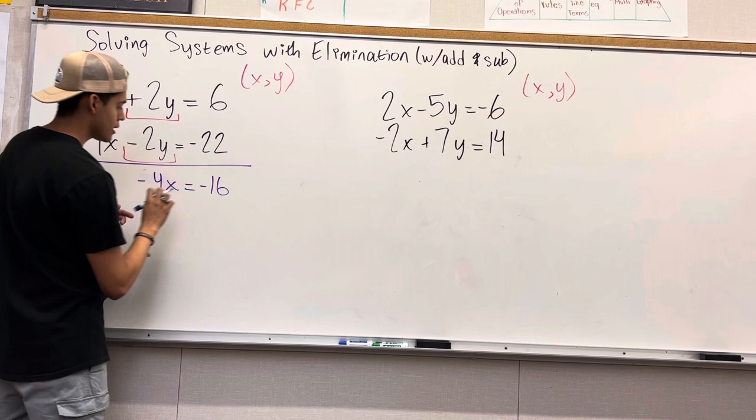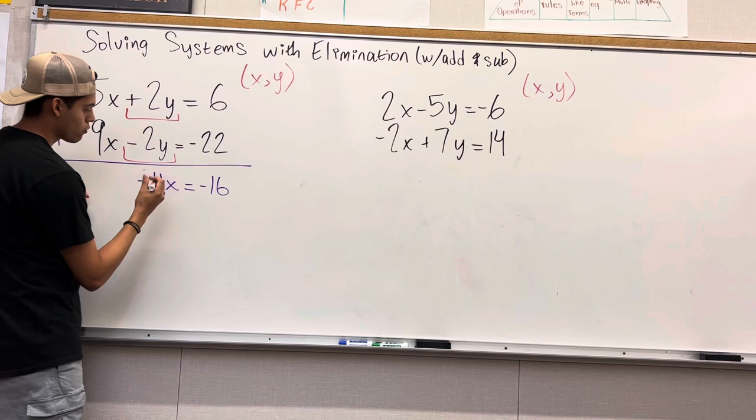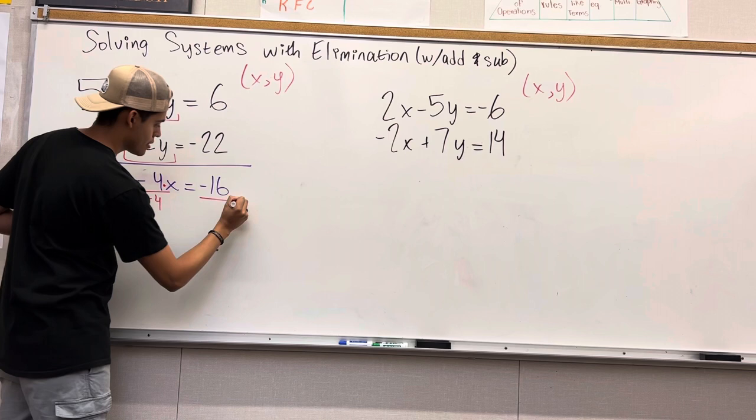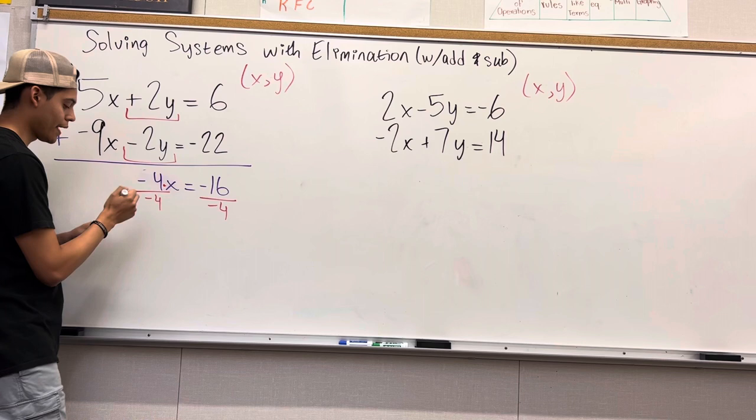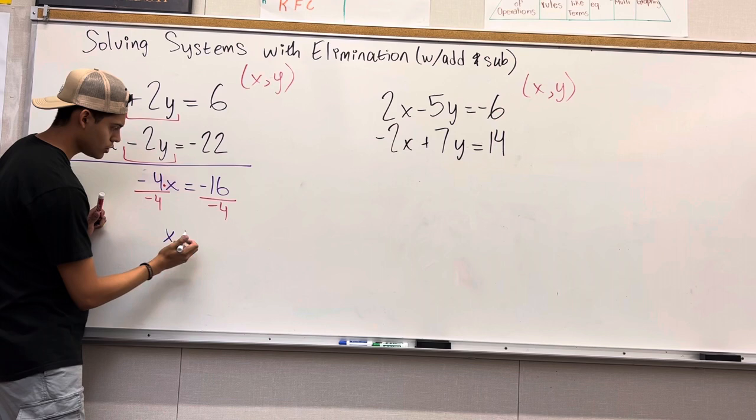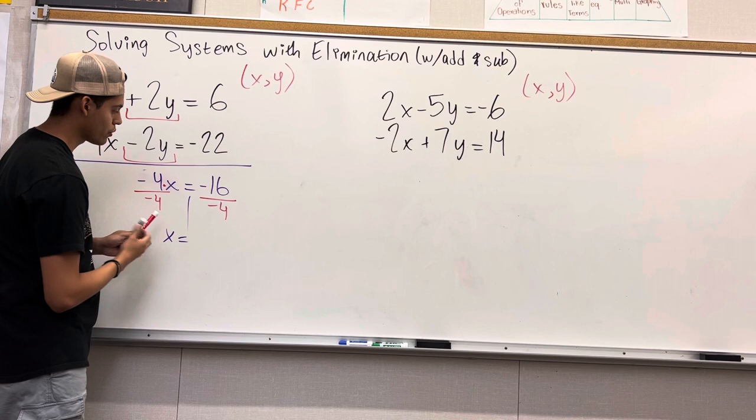Now we are trying to get x by itself. So right here it is a multiplication problem so we are going to do the opposite which is division. Divide negative 4 by both sides. Don't forget about the negative. A lot of students do. Don't forget about the negative. Negative 4 divided by negative 4 will give you 1, just x. Negative 16 divided by negative 4 will give you positive 4. And there we go.